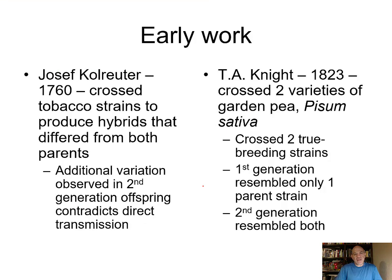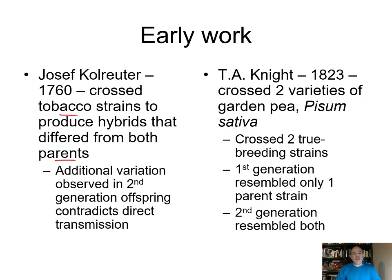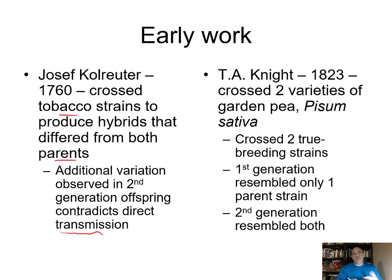Some early work: in 1760, Josef Kohlreuter crossed tobacco strains and produced hybrids. What he saw was that the hybrids differed from both parents — you take traits from one type of tobacco plant and another, cross them, and the next generation looks different from the parents. There was also additional variation in the second generation offspring. This contradicts the blending idea.